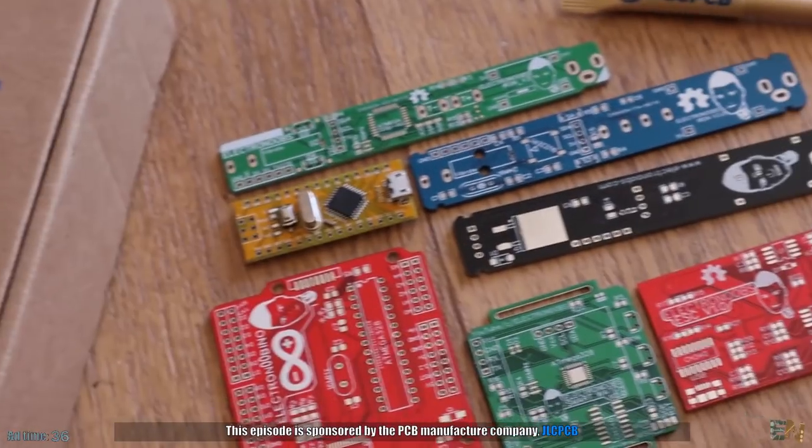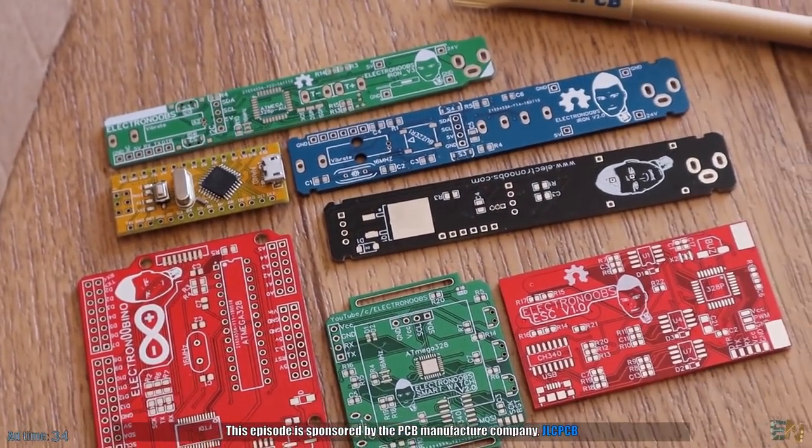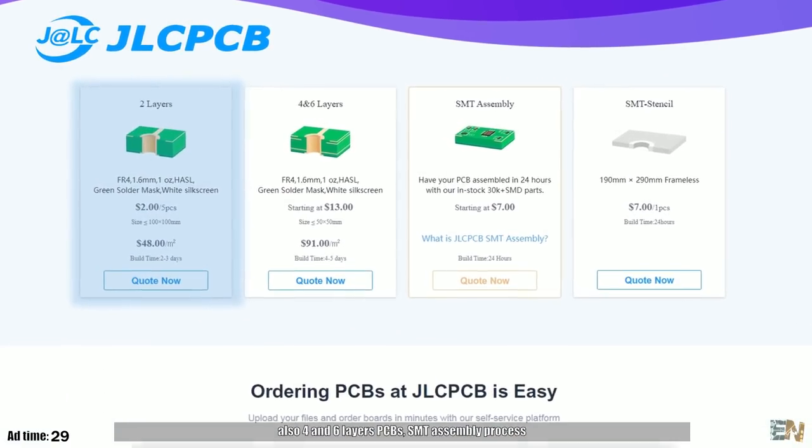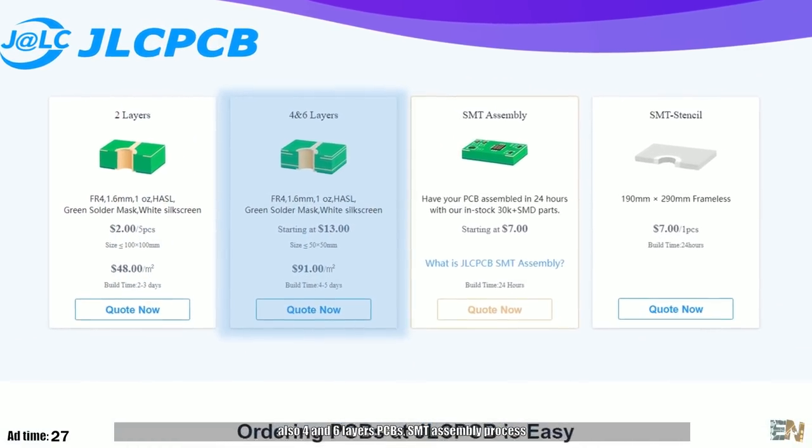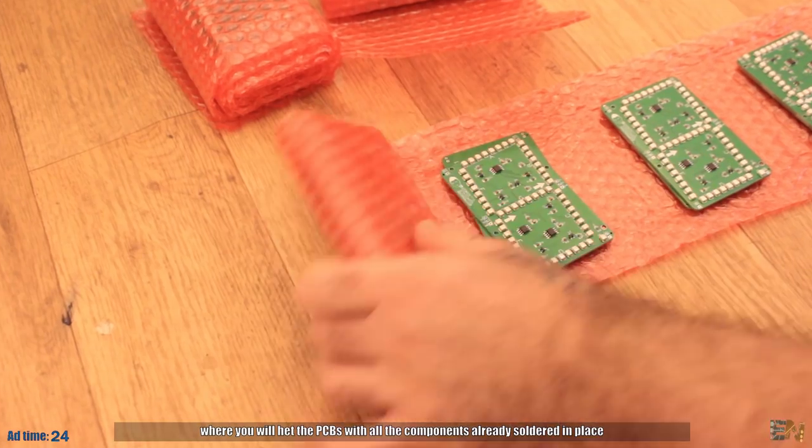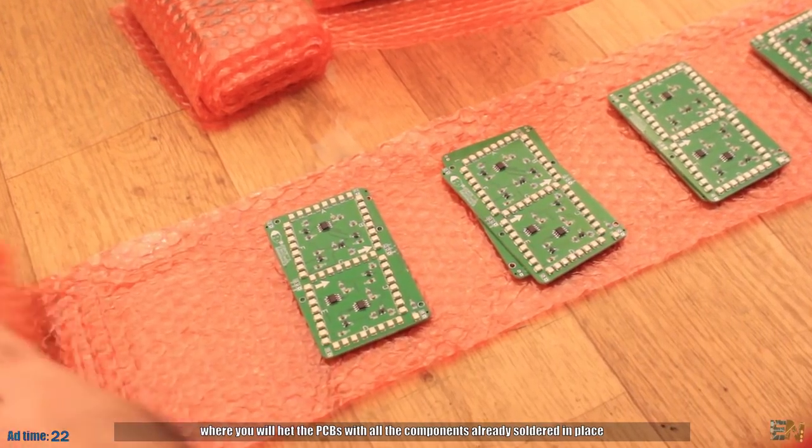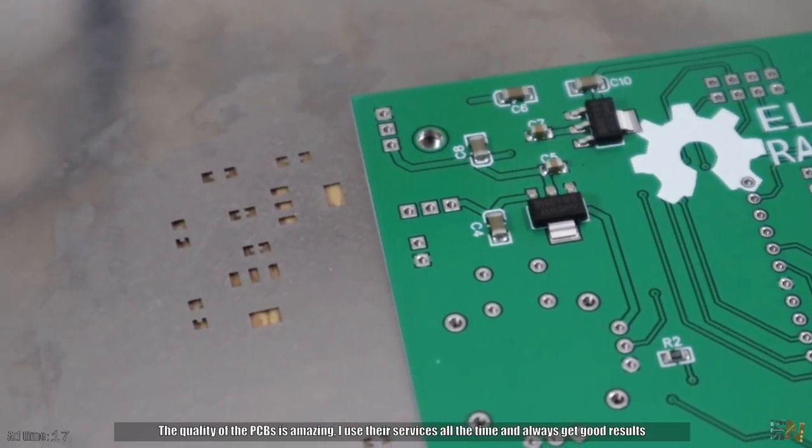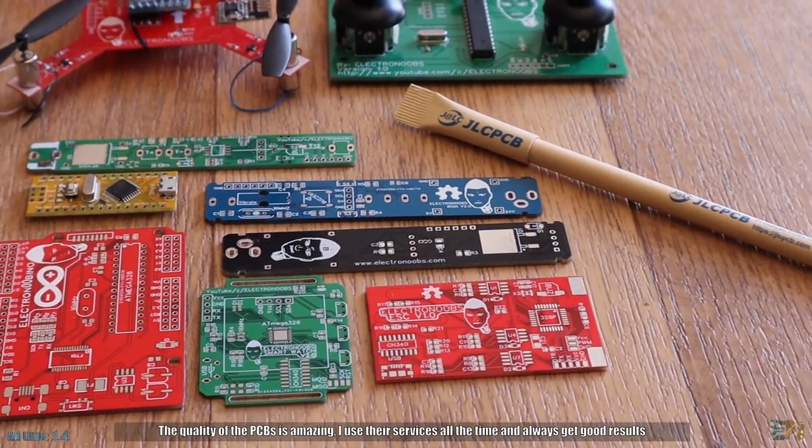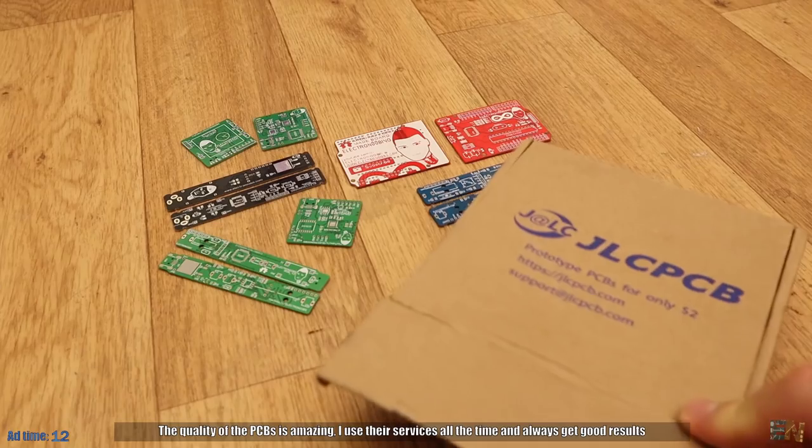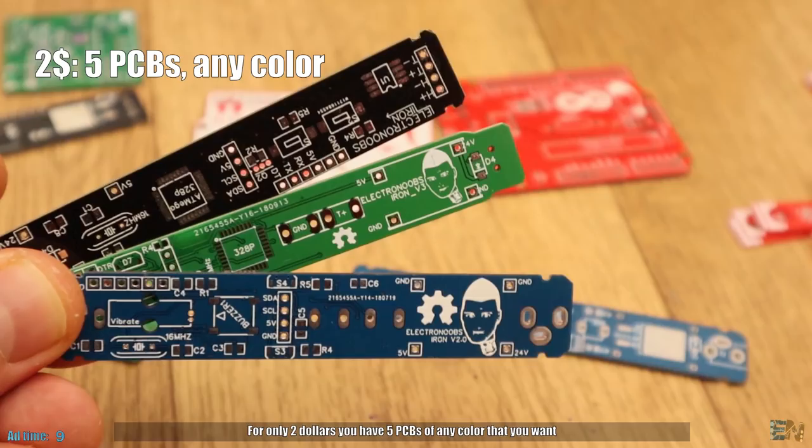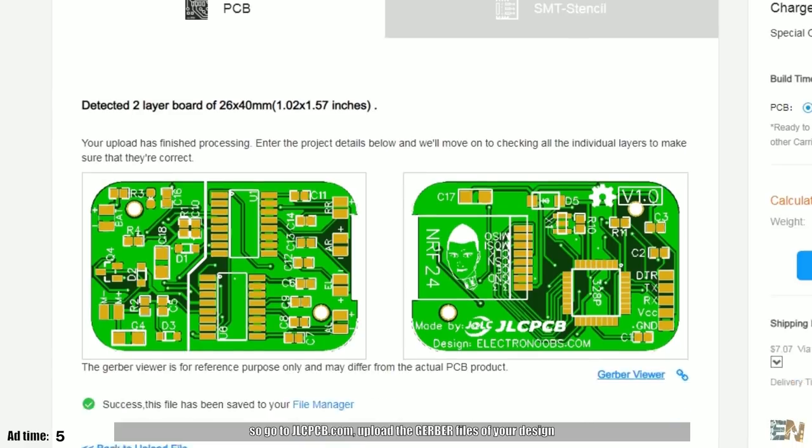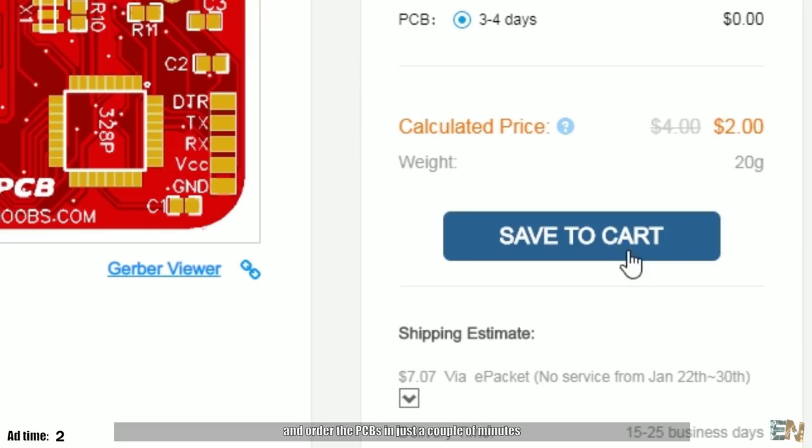This episode is sponsored by the PCB manufacturer company, JLCPCB. Their main services are two-layer PCBs for only $2, also 4 and 6 layer PCBs, the SMT assembly process where you'll get the PCBs with all the components already soldered in place, and also the SMT stencil for soldering SMT components with solder paste. The quality of the PCBs is amazing. I use their services all the time and always get good results. For only $2, you have 5 PCBs of any color that you want. Go to JLCPCB.com, upload the gerber files of your design and order the PCBs in just a couple of minutes.